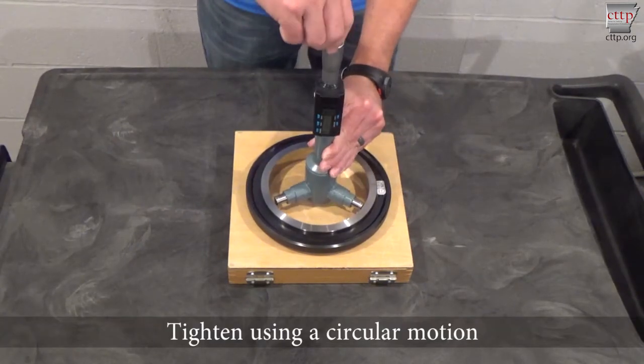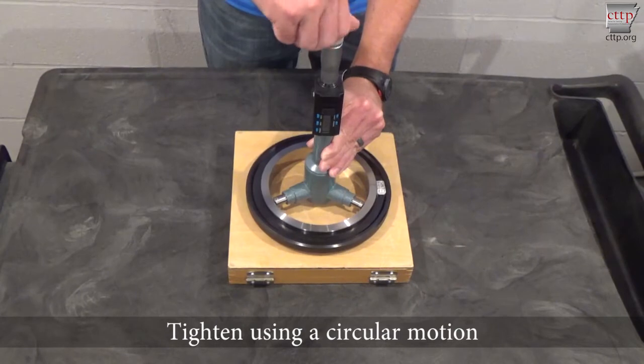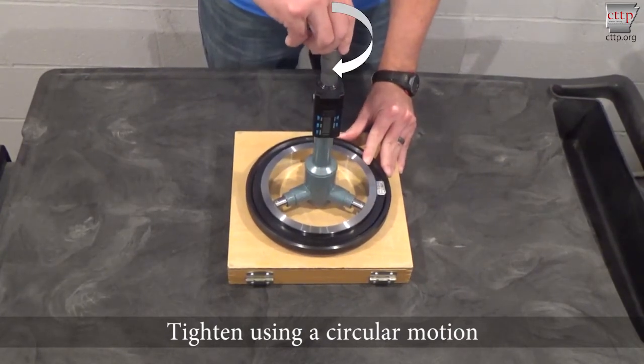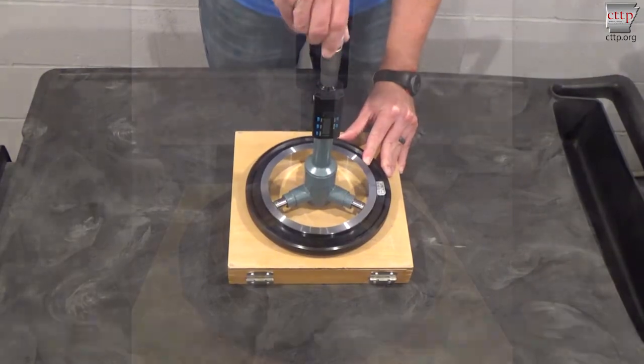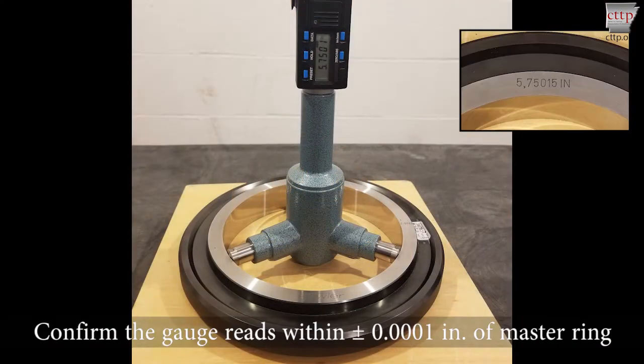Turn on the bore gauge and center it. Then tighten by turning the top dial clockwise using a circular motion until it clicks two or three times. Record the reading on the screen and confirm that it is within 0.0001 inches of the calibrated inside diameter of the master ring. Loosen the bore gauge and remove it from the master ring.